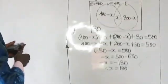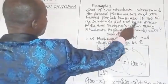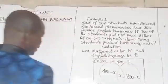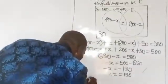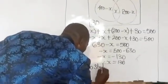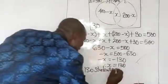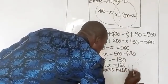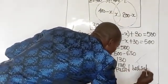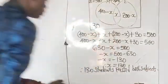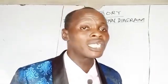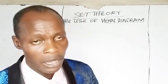Going back to the question: how many students passed both subjects? Therefore, 130 students passed both subjects. That is the solution to Example 1. This marks the end of this lecture. In my next video, I will examine how to solve set theory involving three different items using the Venn diagram. Please drop the love emoji, share the video with others, and subscribe. Thanks for watching.